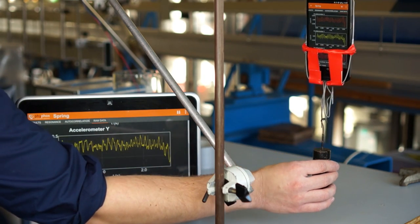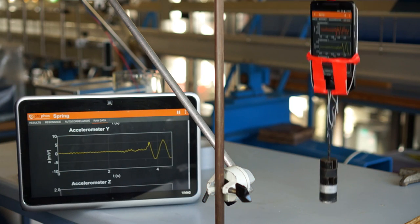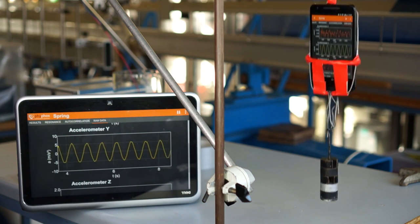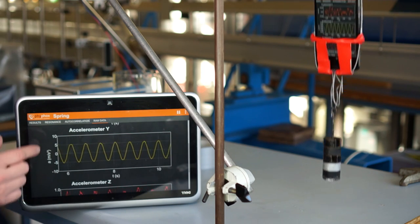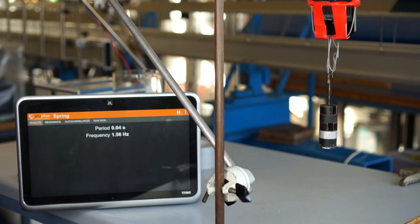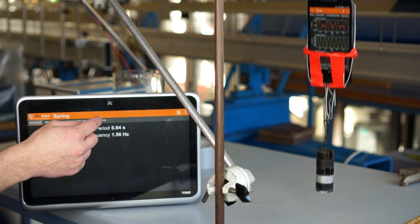When using the spring experiment, VFOX analyzes and shows the frequency and period of the oscillation, but you can always view the raw data. If you just want to monitor the motion over a longer period, you can also just use the raw sensor experiment to show the accelerometer data.